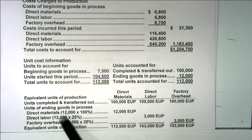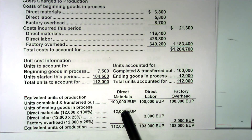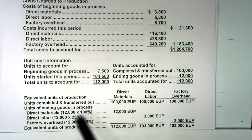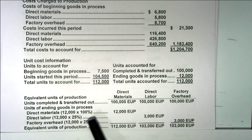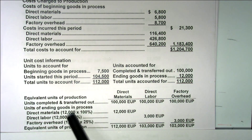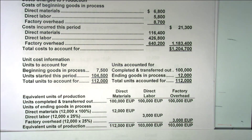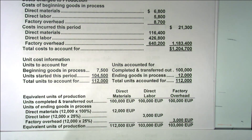The twelve thousand is one hundred percent complete in regards to materials, but in regards to direct labor and overhead — which is applied on direct labor — it's only twenty-five percent done. So twenty-five percent times twelve thousand is three thousand equivalent units of production. I think that's the end of the first page of your template.